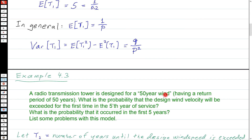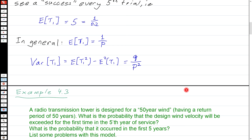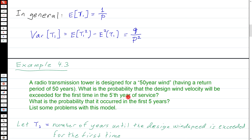Let's look at an example of the geometric distribution. Suppose we're designing a radio transmission tower for a 50-year wind — a wind with a return period of 50 years. On average, every 50 years we see a wind of at least this design speed, meaning each year the probability of exceedance is 1/50. The question is: what is the probability that the design wind velocity is exceeded for the first time in the fifth year of service? And also, what is the probability it occurred sometime in the first five years?